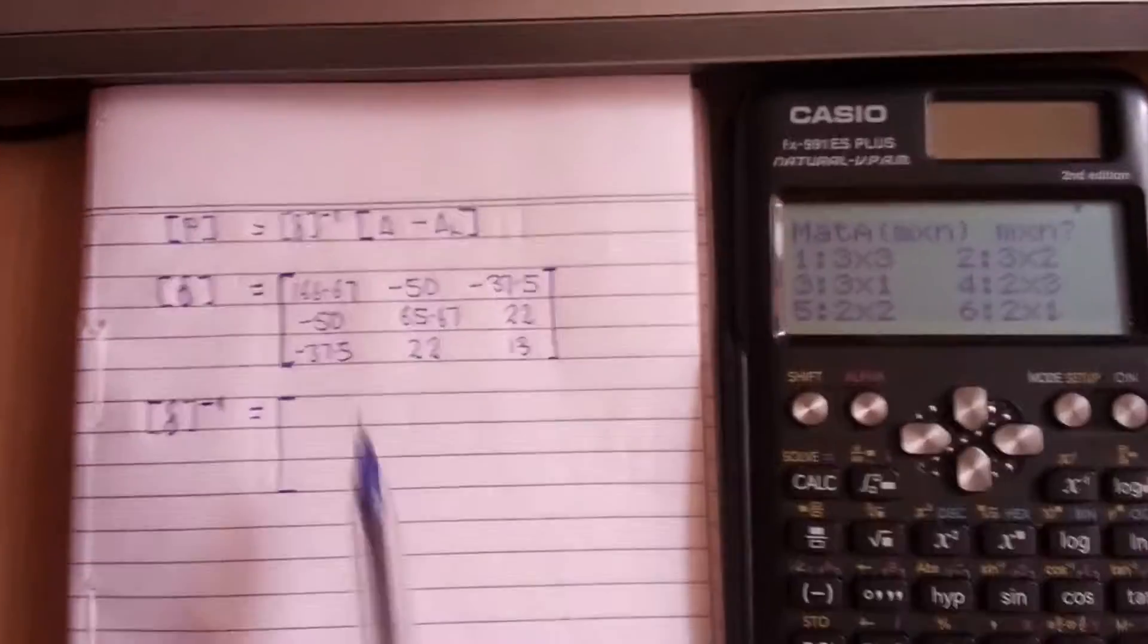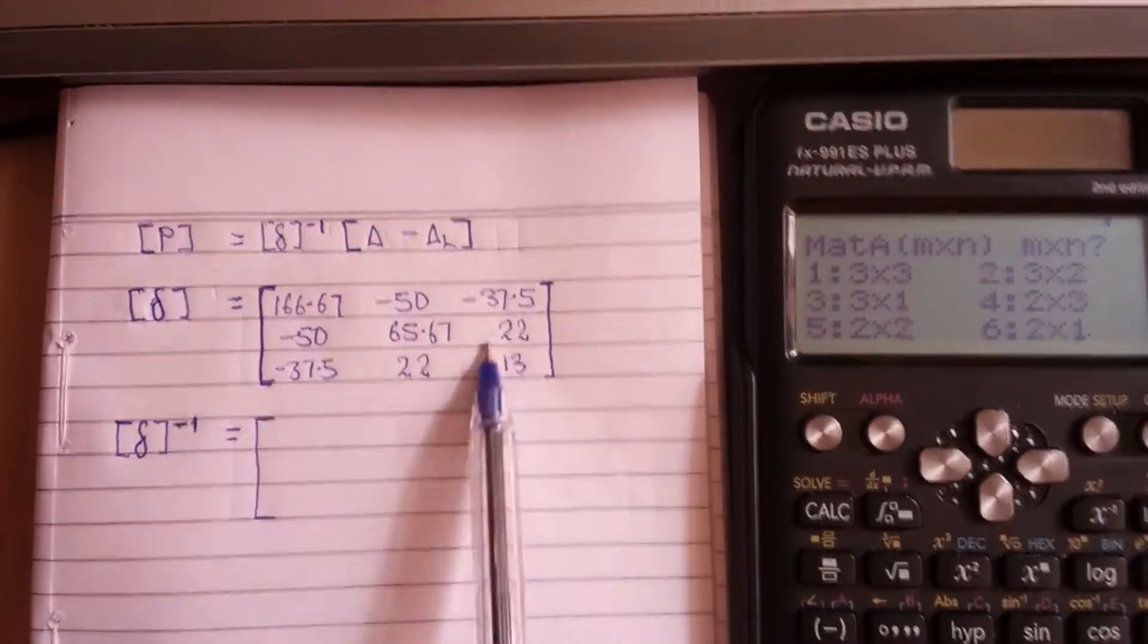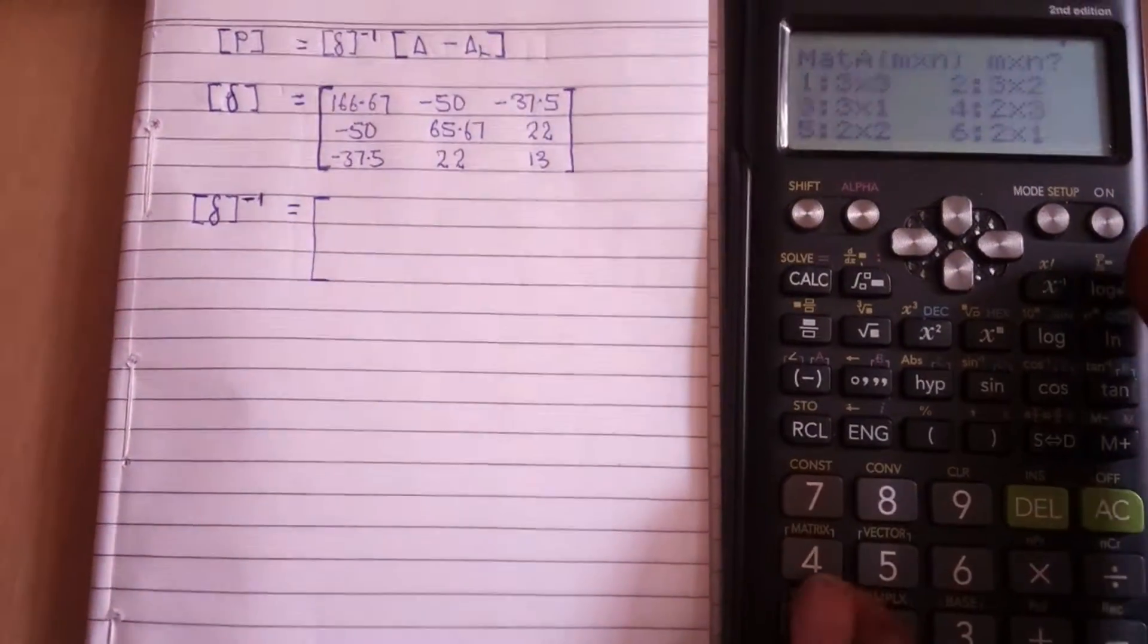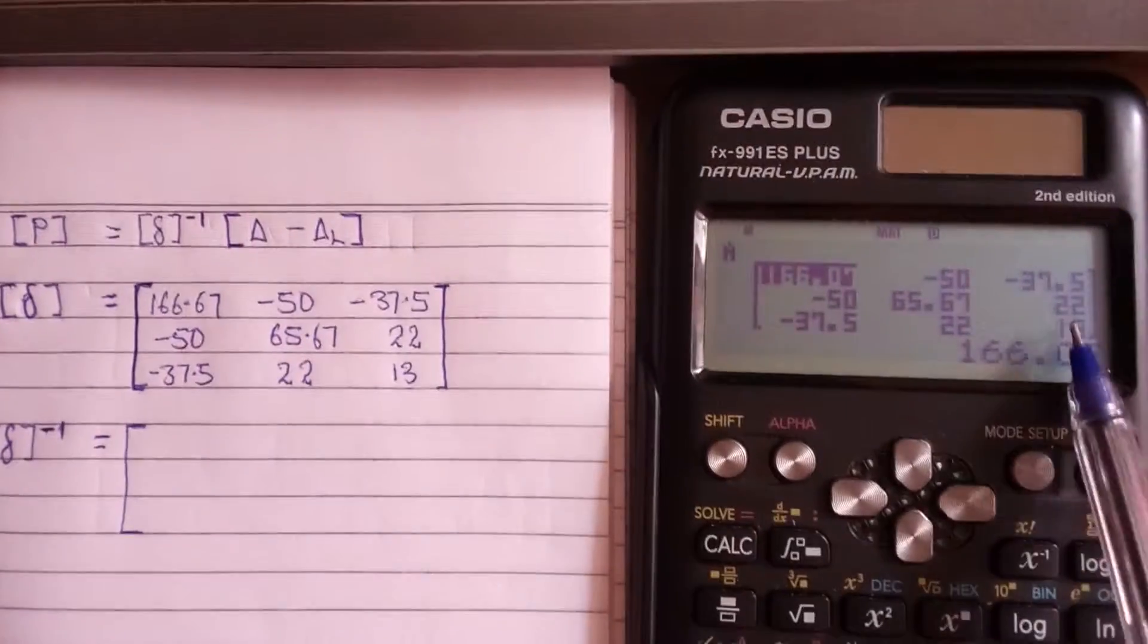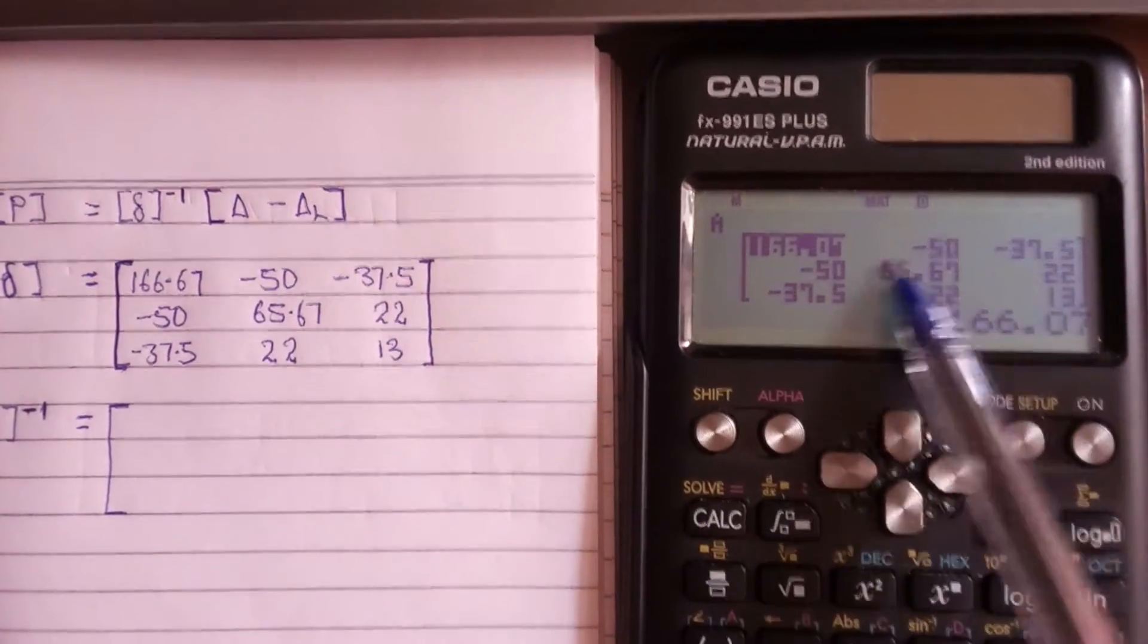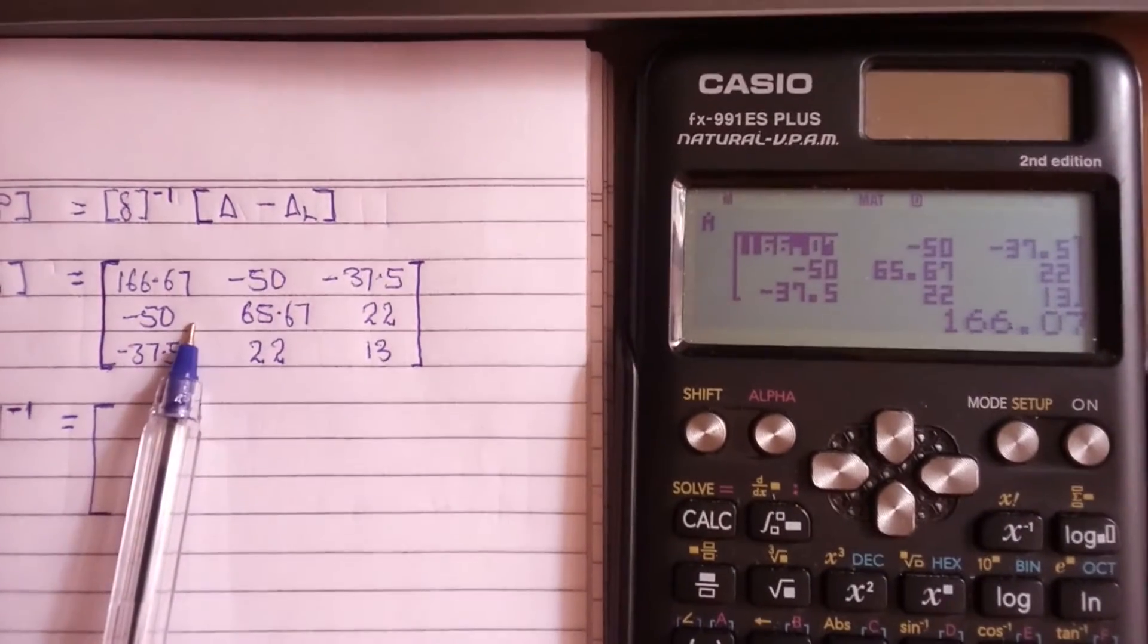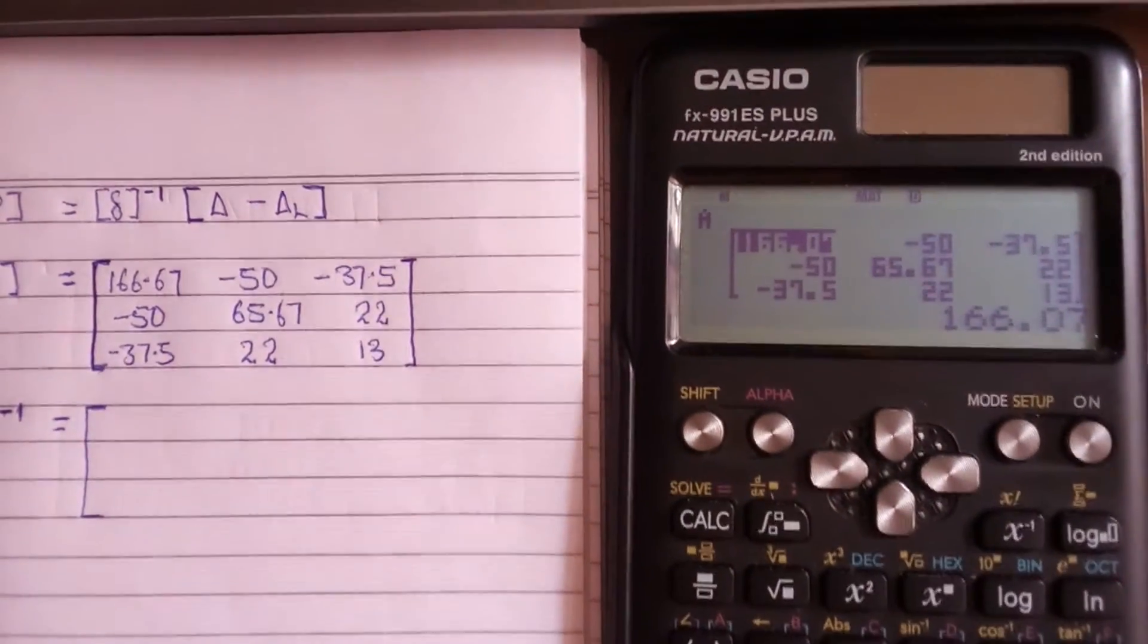Now I'm going to choose 1, which is matrix A. Because my matrix is 3 by 3, I'm going to choose 1 again which signifies 3 by 3. This is the former matrix I have already put before, I did not clear it.